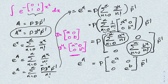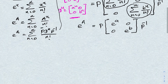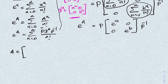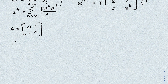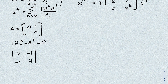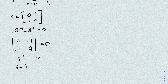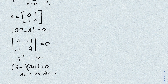Now, our matrix A is [[0,1],[1,0]]. I'm going to find the eigenvalues by setting det(λI - A) = 0. This gives λ times λ minus (-1)(-1) equals zero, so λ² - 1 = 0. That factors as (λ - 1)(λ + 1) = 0, giving eigenvalues λ = 1 or λ = -1.